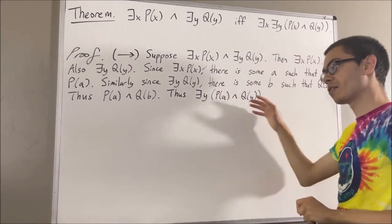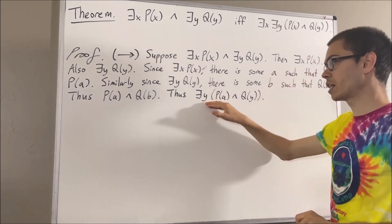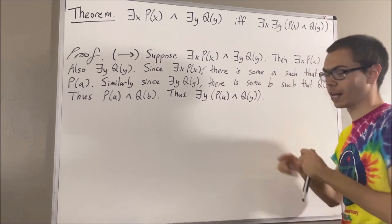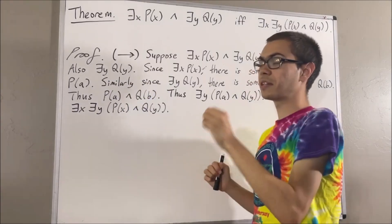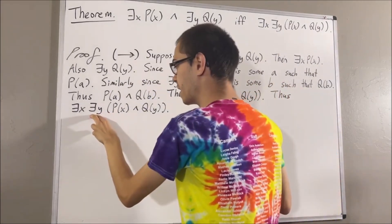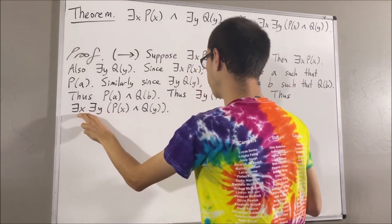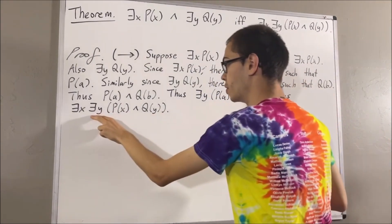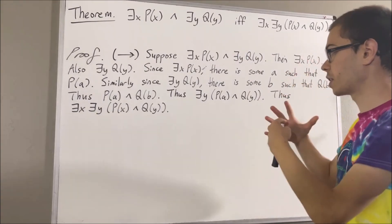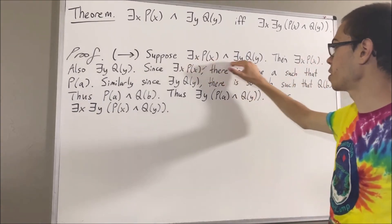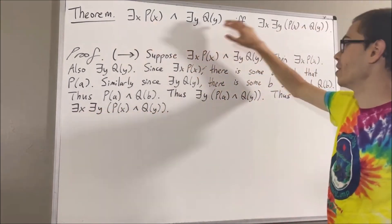And then from here we can say that there exists an object x such that there exists an object y such that p of x and q of y. There is at least one object which makes this statement turn out true — namely, if we take x to be a, this would be true because that's what we have here. So putting this together, we see under the assumption this is true, we have that this is true. So we have proven if this is true, then this is true.